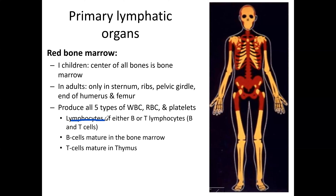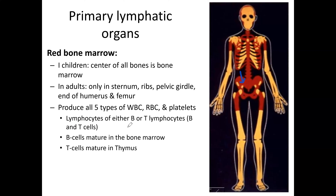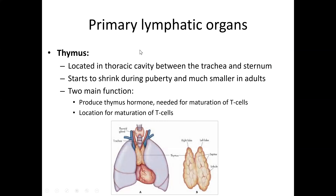Red bone marrow produces B and T lymphocytes, also called B and T cells. B cells mature in the bone marrow — that's why they are called B cells. T cells are produced in the bone marrow but then move to the thymus, the gland above your heart, to mature there.